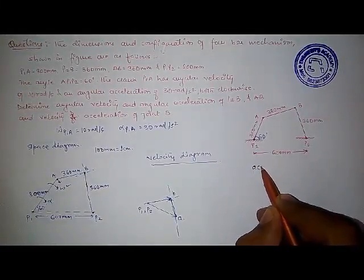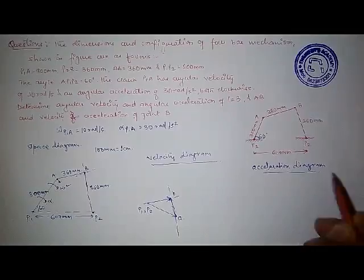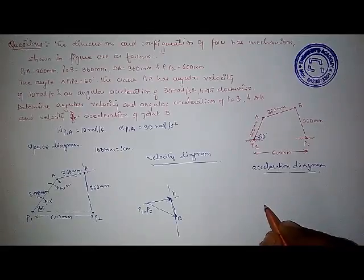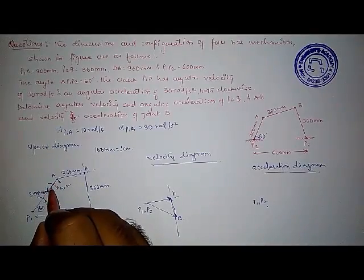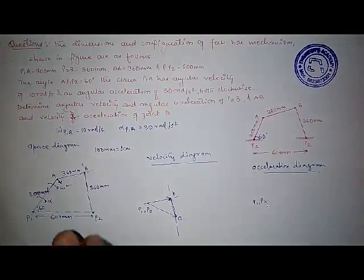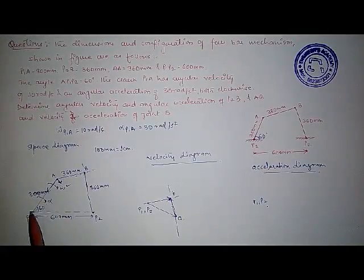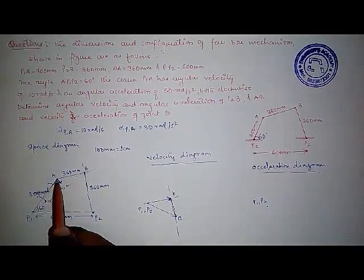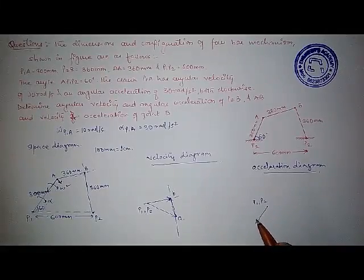Now we draw the acceleration diagram. For every link we get two components: the radial component and the tangential component. Looking at link AP1 first — the fixed points are P1 and P2. The radial component will be in this direction (parallel to AP1), and the tangential component will be perpendicular to the link in this direction. Using these two components we can draw the acceleration diagram: the radial component is parallel to AP1, and the tangential component is parallel to the velocity of P1A.